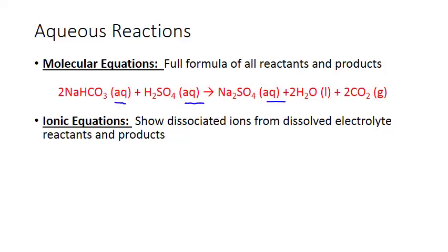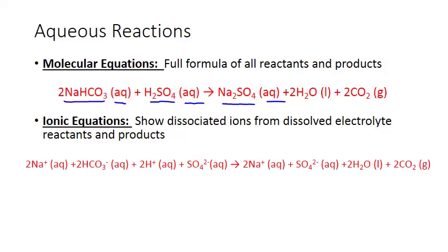Electrolytes are ionic compounds and acids. In this example, sodium bicarbonate, sulfuric acid, and sodium sulfate are electrolytes. When these substances dissolve in water, they actually separate into positive and negative ions that are surrounded by water molecules and can move freely and independently of each other. We show these individual ions in the ionic equation.